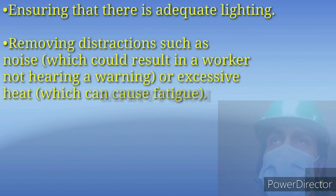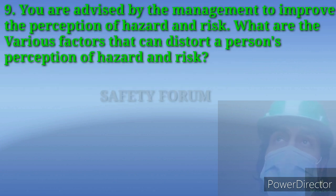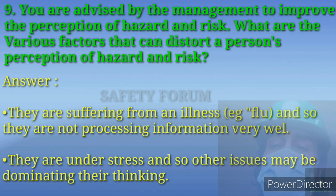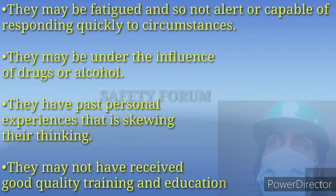The ninth question: You are advised by management to improve perception of hazard and risk. What are the various factors that can distort a person's perception of hazard and risk? The factors are: they may be suffering from an illness such as flu and not processing information well; they may be under stress so other issues dominate their thinking and working capabilities; or they may be fatigued and not alert or capable of responding quickly to circumstances.